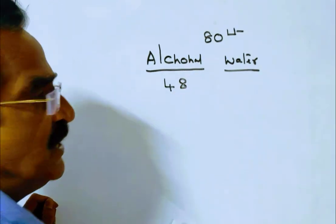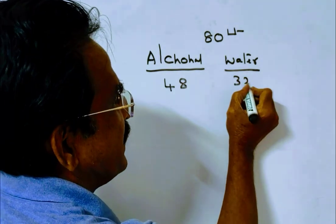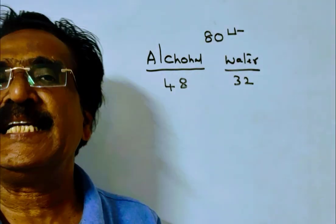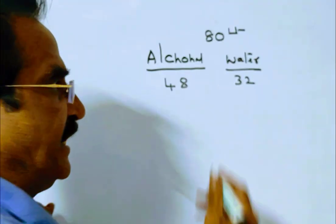48 liters of alcohol, so the remaining 32 liters is water. Now x liters of water is added.